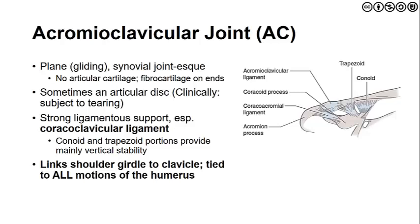The acromioclavicular joint is a plane type synovial joint with gliding. We do not see articular cartilage; rather, it's fibrocartilage that exists at the ends of these structures. Sometimes we can see an articular disc — in contrast to the SC joint, where there is always an articular disc. Clinically, if a disc is present at the AC joint, there could be some susceptibility to tearing that could occur with blunt force trauma to the end of the shoulder.